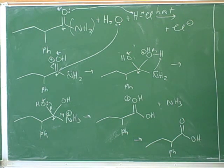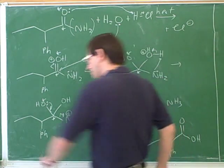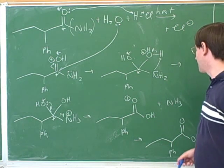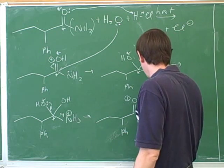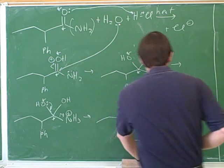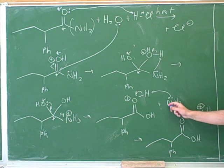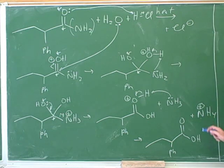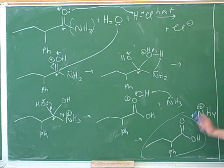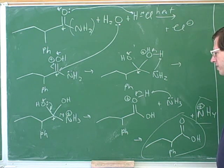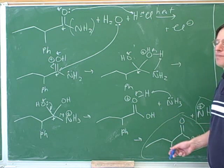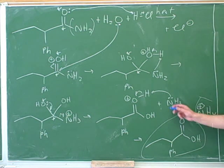Under these conditions, should the amine be protonated or deprotonated? It should be protonated. So the ammonia taking this proton is the best step. You could have the chloride take the proton and then have HCl protonate the amine, but it's faster to just show the ammonia taking the proton directly. After the ammonia takes the proton, since it started neutral and gained a proton, it now carries a positive charge — it becomes ammonium. So here we have ammonium, consistent with the acidic conditions.